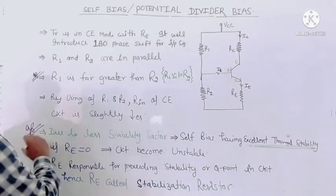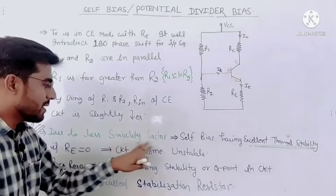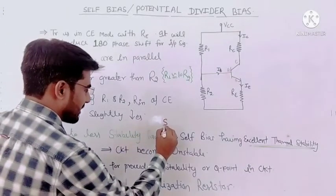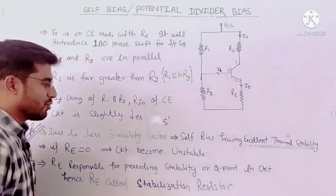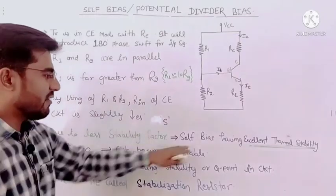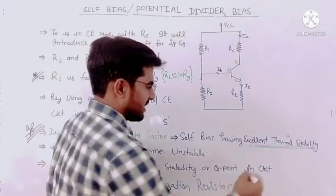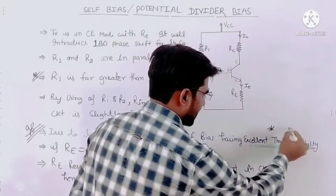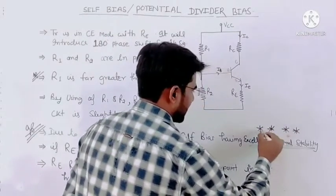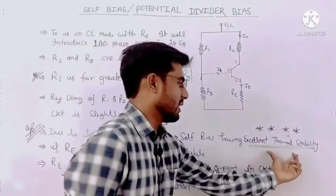The next very important point to remember from an objective point of view: due to a less stability factor — which we represent by S — self biasing has excellent thermal stability. This is very important and is the biggest advantage of voltage divider biasing.